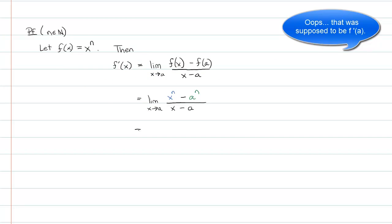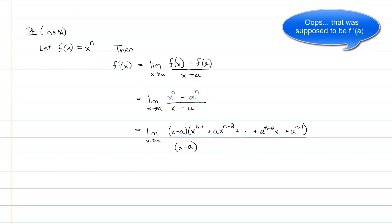Going back to the main proof, I can now expand that numerator using our lemma. You can see the (x minus a) factors cancel beautifully, and now we have a clean limit as x approaches a of what remains. At this point we have no problems with direct substitution, because substituting a for x does not lead to division by zero or domain issues. So we can just substitute a for x.